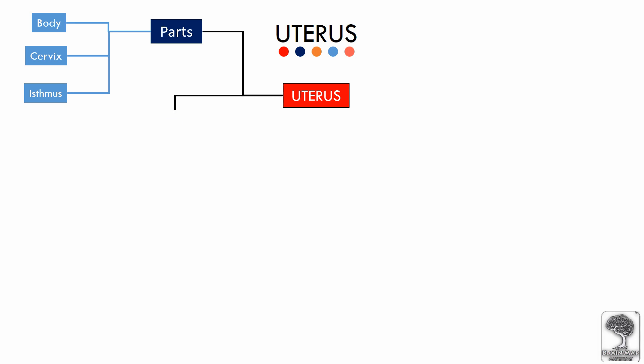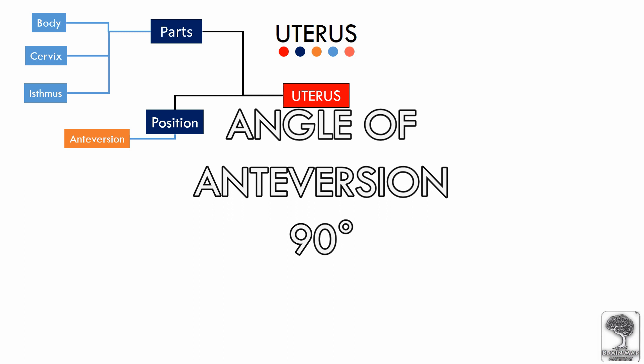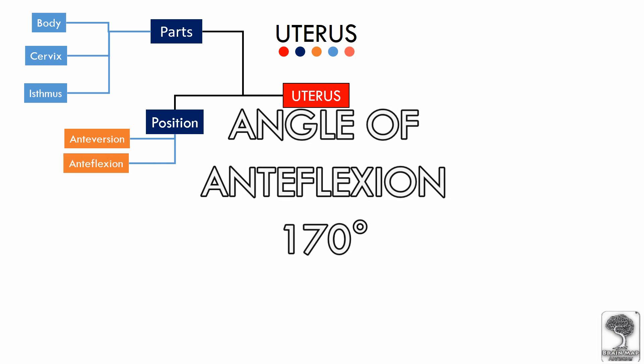Now we will see the normal position and angulation of the uterus. A non-gravid uterus is a pelvic organ, and the angle made between the long axis of the uterus and the long axis of the vagina is called the angle of anteversion, which is 90 degrees. Whereas the flexion of the body of the uterus with respect to the cervix is referred to as the angle of anteflexion, which is 170 degrees.